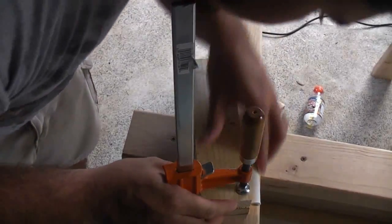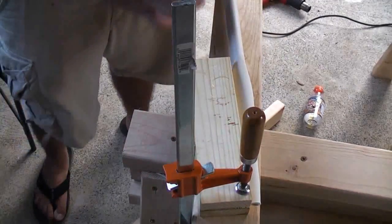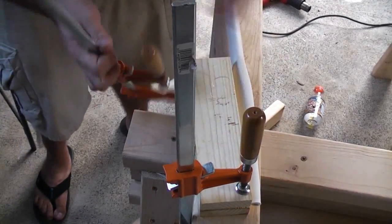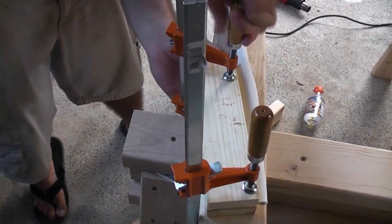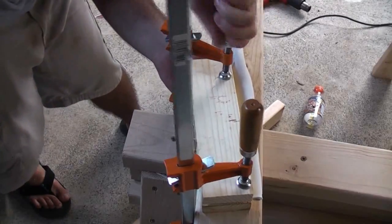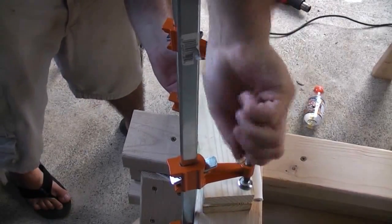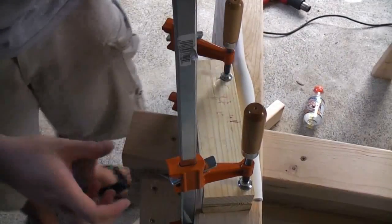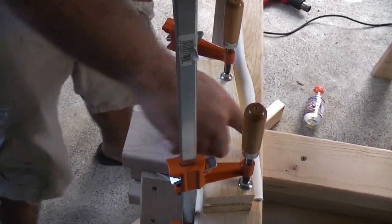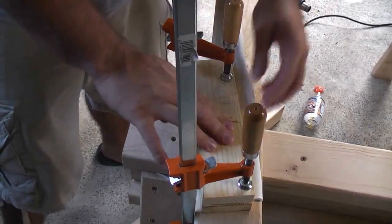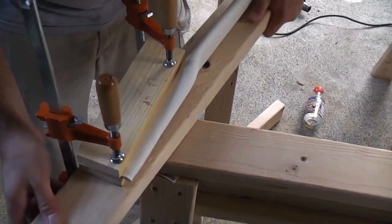So you just want to clamp it really tight. What we're doing is we're going to be creating a nice line here so we can cut this clear, just in case you can't really see that well.